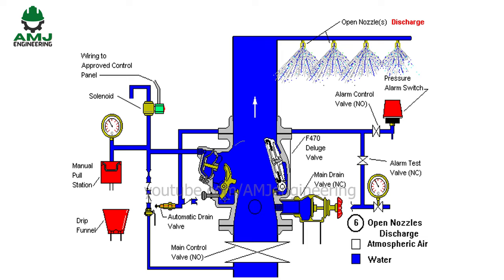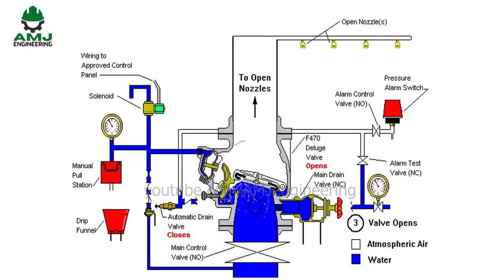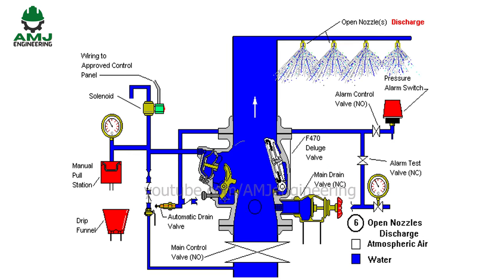An important consideration in the selection of the type of sprinkler system is the level of hazard being protected. If protecting an area of very high hazard, such as aircraft hangars, a deluge system may be the most suitable.